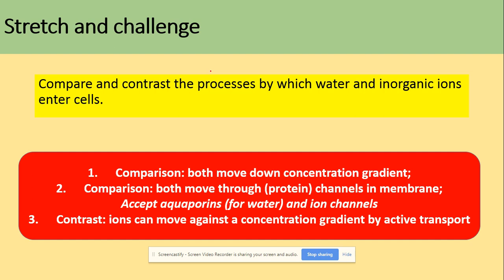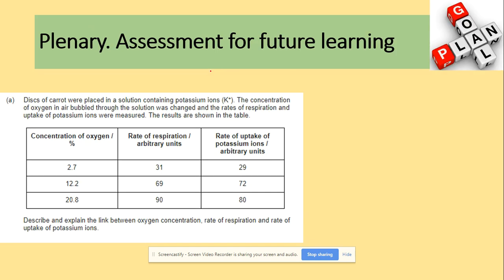Comparing water and ion entry: both move down a concentration gradient, and both can move through protein channels in the membrane. For example, when studying osmoregulation in section 8, you will look at aquaporins in the collecting ducts — these are porins that allow further reabsorption of water. By contrast, ions can move against the concentration gradient by active transport, whereas water cannot be moved by active transport.